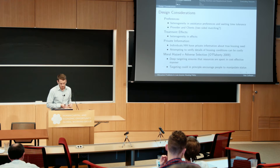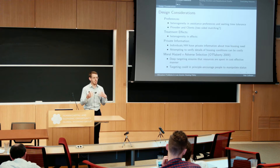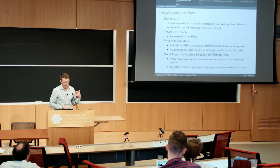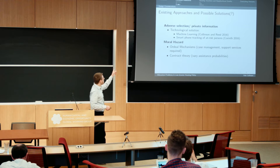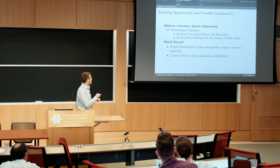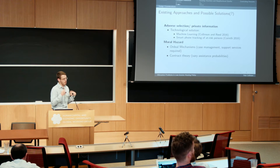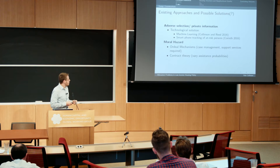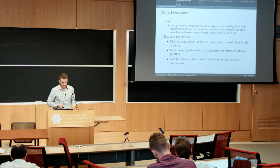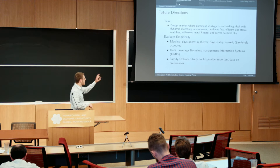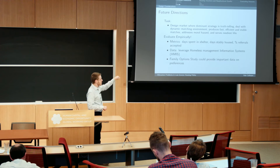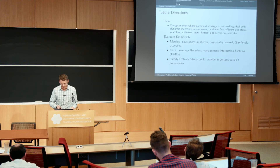In New York, there was something called Dinkins Deluge where they changed some housing preferences and people flocked to shelters because they thought that was their ticket to a voucher — so moral hazard and adverse selection are real issues. I have a project trying to use machine learning to identify who's really at risk, and there's a similar concept using smartphones. On moral hazard, could we institute ordeal mechanisms or certain types of contracts to resolve things? The future task is simple: just design a market where the dominant strategy is truth-telling, it deals with a dynamic matching environment, produces fast efficient and stable matches, addresses moral hazard, and serves the neediest households.